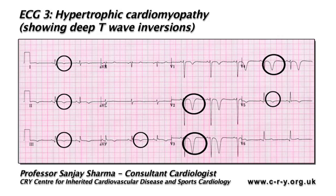This type of widespread T-wave inversion should always make one consider the diagnosis of an underlying cardiomyopathy. This patient was also diagnosed with hypertrophic cardiomyopathy. I should pause at this point and talk about the significance of T-wave inversions in otherwise athletic individuals.